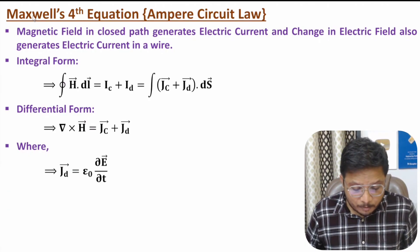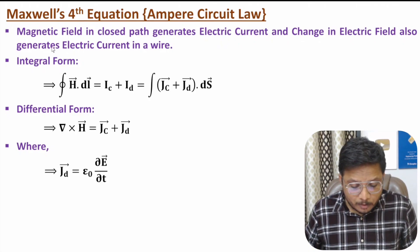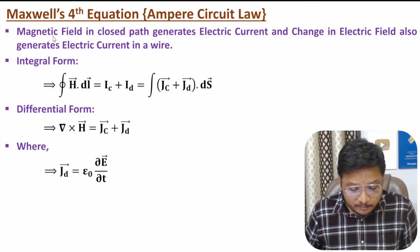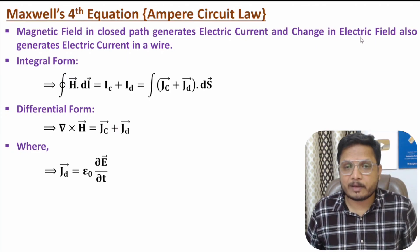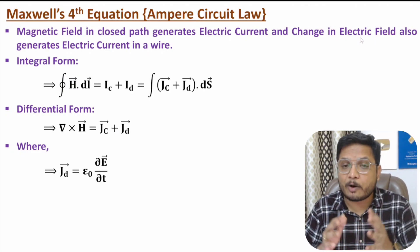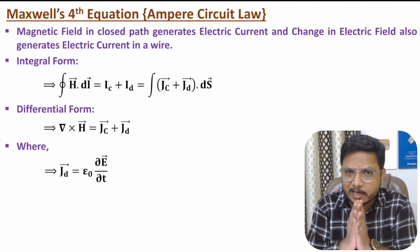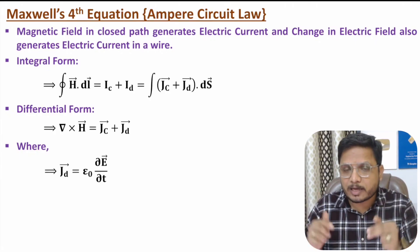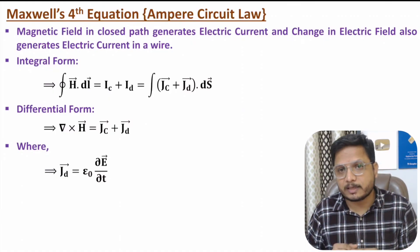Maxwell's fourth equation is based on Ampere's circuit law, which explains electric current in a wire due to magnetic field in a closed path, as well as due to change in electric field. I hope now you have a fair enough idea about how Maxwell's four equations work. If any confusion is there, post it in the comment section. I will be happy to help you. Thank you so much for watching this video.